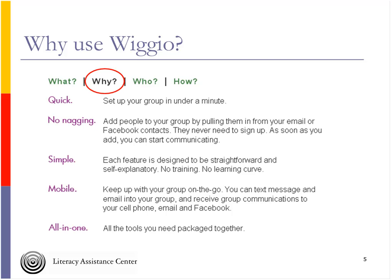Some programs are probably using Edmodo and other tools created more for K-12, which are perfectly great tools. What I like about WIGIO compared to Edmodo is that it's not hierarchical. You do have an administrator in WIGIO, but there's nothing in the interactions that makes it feel teacher-student in a strict way. In Edmodo, there's a clear teacher and students, and for adults that can feel unnecessarily hierarchical. In WIGIO, we're all there together.